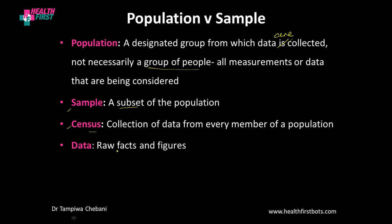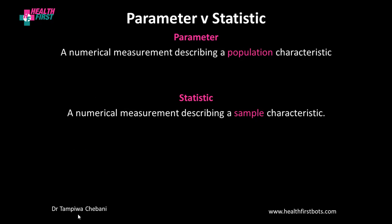Data are simply raw facts and figures. The words parameter and statistic refer respectively to the population and the sample. When you are talking about a numerical measurement describing a population, you are talking about a parameter. When you are talking about a numerical measurement describing a sample, you are talking about a statistic. So parameter refers to population, and statistic refers to sample.